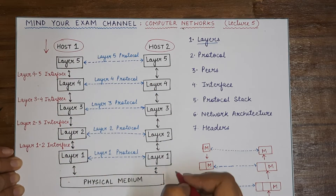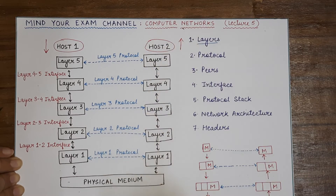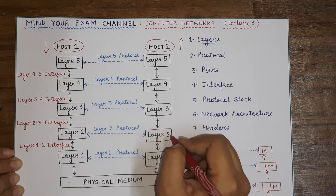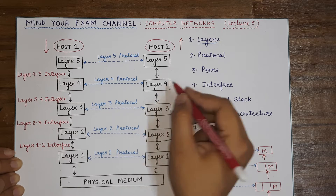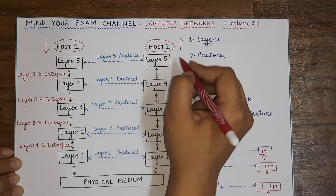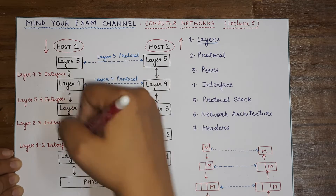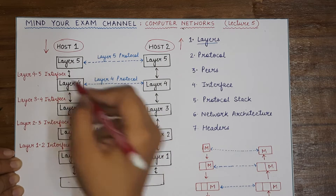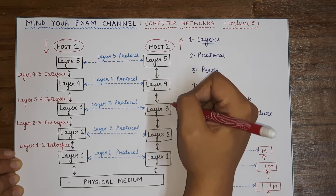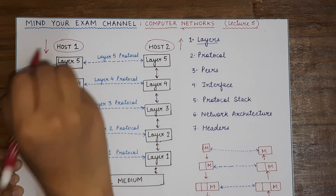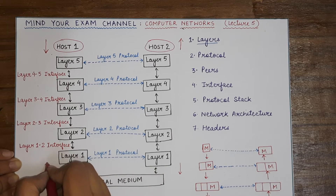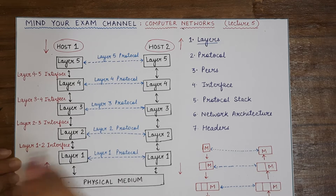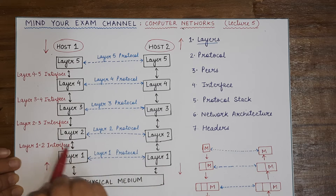When the communication reaches layer 1, it interacts with the physical medium — the actual cables, wires, links, or wireless waves carrying the information. At host 2, the layers interact in a bottom-up manner. Layer 1 communicates to layer 2, layer 2 provides services to layer 3, layer 3 to layer 4, and layer 4 to layer 5, to deliver the message and complete the communication that host 1 had initiated.